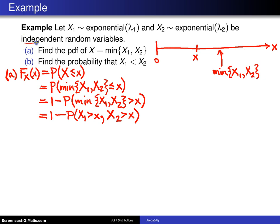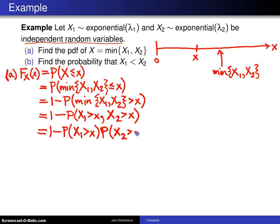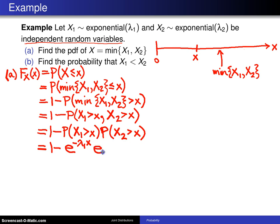Now I'll exploit the fact that they are independent random variables. This becomes 1 minus the probability that X1 is greater than x, multiplied by the probability that X2 is greater than x. The values here are 1 minus the CDF for X1 and X2. For X1 that is e to the minus lambda 1 times x, and for X2 that is e to the minus lambda 2 times x.